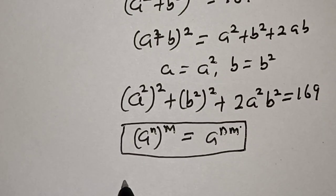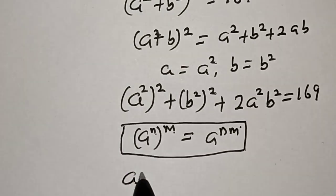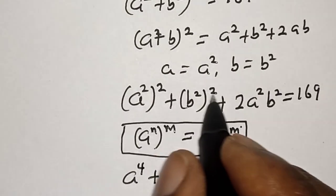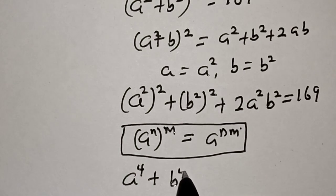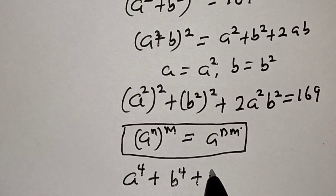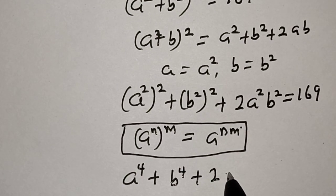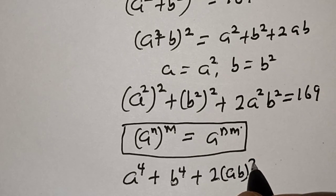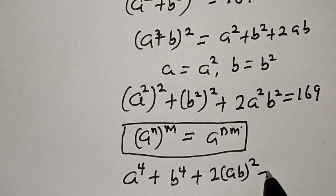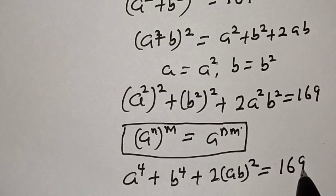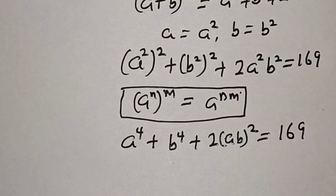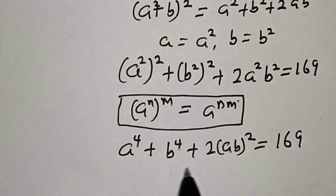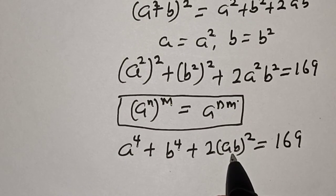Applying this rule, we get a raised to power 2 times 2, that is 4, plus b raised to power 2 times 2, that is 4, plus 2·(ab)² equals 169. This gives us a to the power 4 plus b to the power 4, which is what we are looking for.